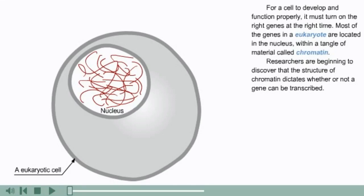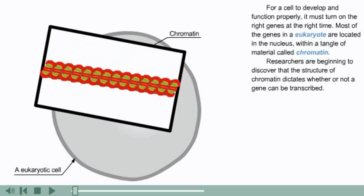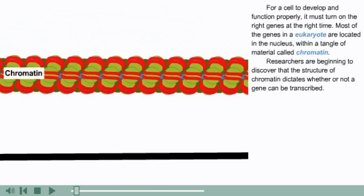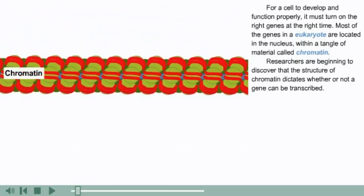For a cell to develop and function properly, it must turn on the right genes at the right time. Most of the genes in a eukaryote are located in the nucleus, within a tangle of material called chromatin. Researchers are beginning to discover that the structure of chromatin dictates whether or not a gene can be transcribed.